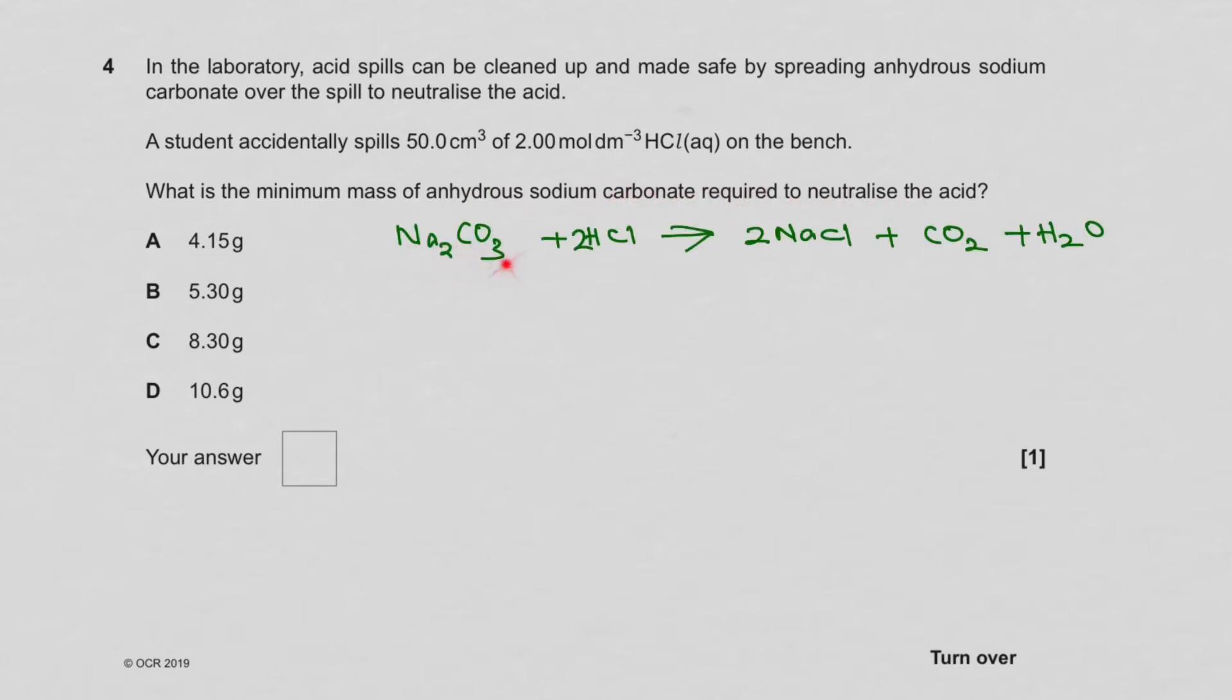Well, the best is to balance the equation of sodium carbonate and HCl, and that gives you 2 sodium chloride plus CO2 plus H2O. Don't forget that's 2 HCl.